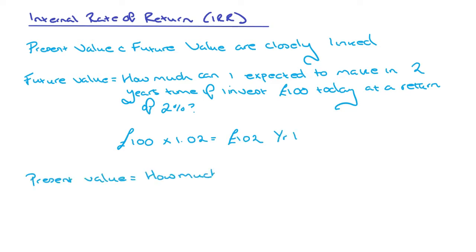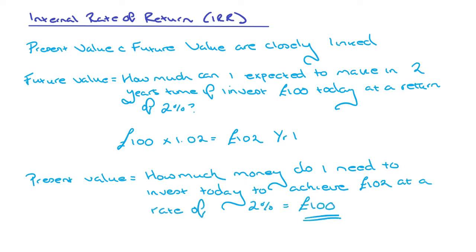Present value is how much money do I need to invest today to achieve a certain value in future. If I wanted to achieve £102 in future and I knew the rate of return was 2%, I would make sure that I invested £100 today. So the present value would be £100, and the £102 at the end of year one would be its future value.